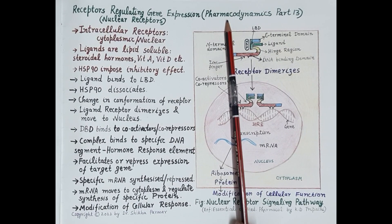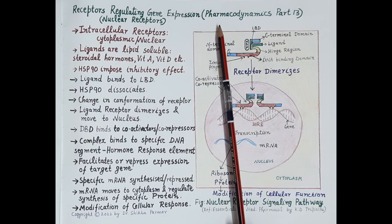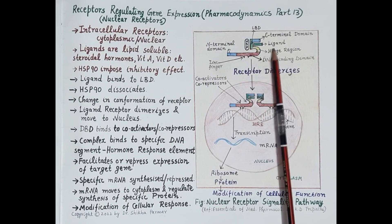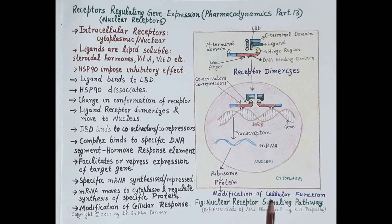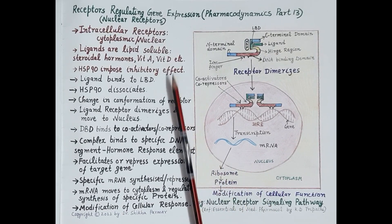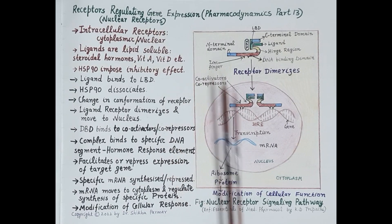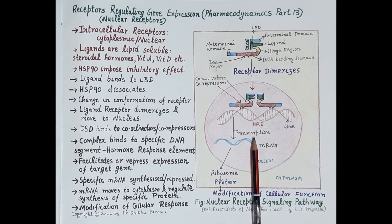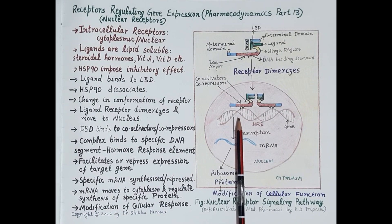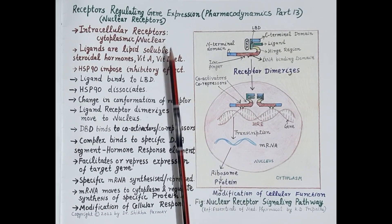As we all know, transducer mechanism is a process by which an external signal in the form of a ligand is received by the cell and converted into a cellular response. Receptors that regulate gene expression are also called nuclear receptors. These receptors are also called transcription factors as they modulate the process of transcription. Transcription is a process by which messenger RNA is produced from the DNA.